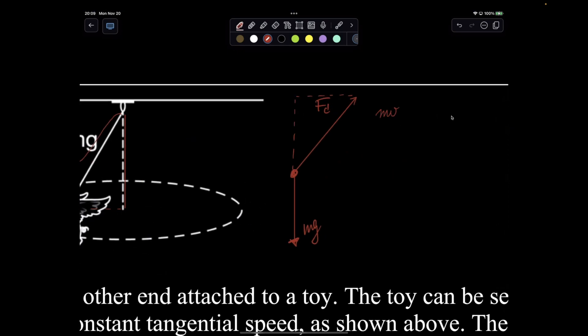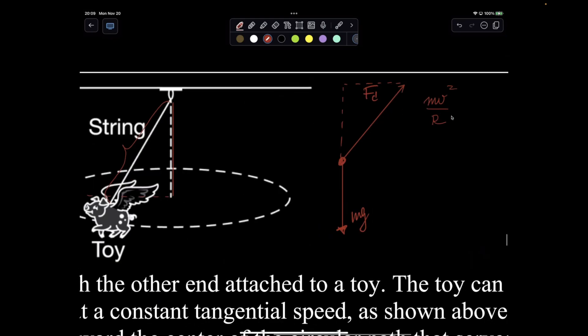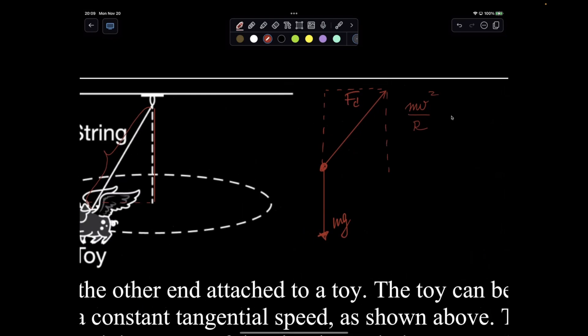And then it's mv squared over r. If I know my angle, I could find this angle right here, and then that would be the same angle. If I have the angle of the string with the vertical, then I can say that my force centripetal is force of tension times sine of theta. If I had a force sensor, for example, I could do that.